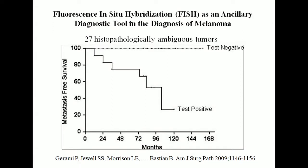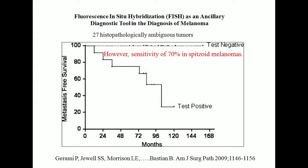They then applied the test to a cohort of 27 histopathologically ambiguous tumors, which would include spitzoid neoplasms. Those that tested negative had a long period of metastasis-free survival, but those that tested positive for this four-probe test had a worse outcome. However, when they looked only at spitzoid neoplasms specifically, the sensitivity wasn't that good — they weren't perfectly discriminating for spitzoid neoplasms as they were for other melanocytic neoplasms — so they went back to work.